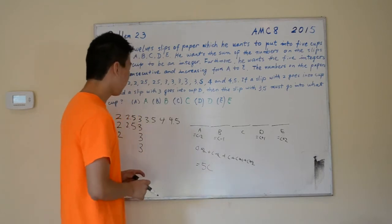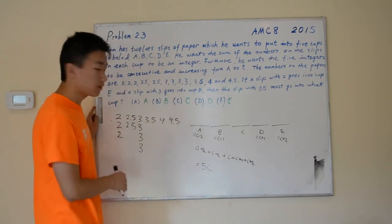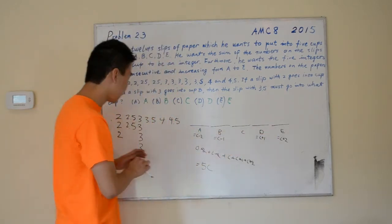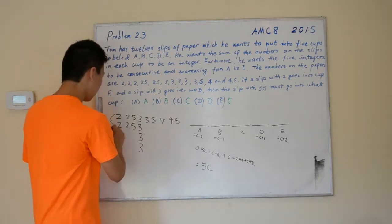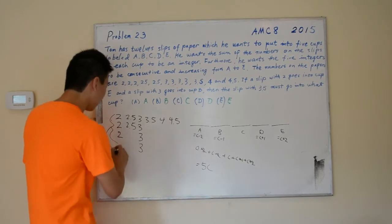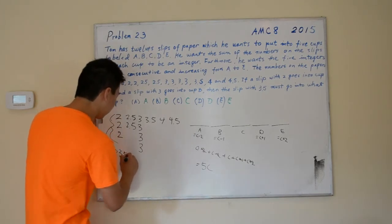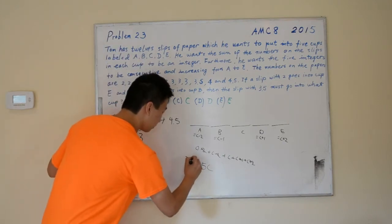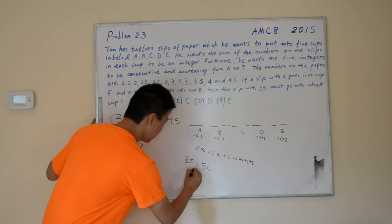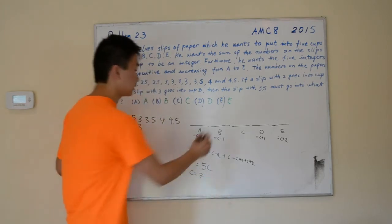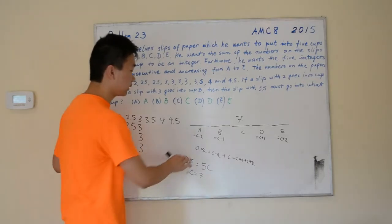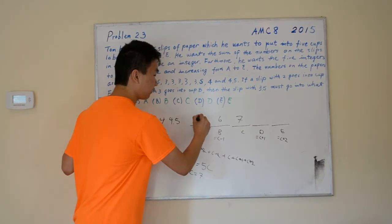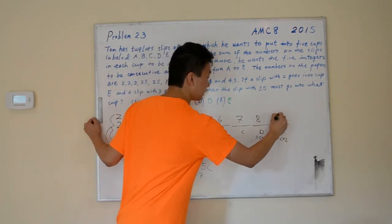We have these 12 numbers here, and we know that all 12 of these numbers go into all 5 of these cups. So, if we add up all of these, the sum ends up to be 35, so this 35 should be the same as this 5C, so 35 equals 5C, so C equals 7. We know that B is C minus 1, so B is 6, A is 5, D is 8, and E is 9.